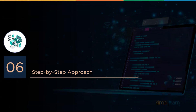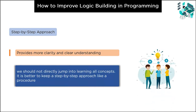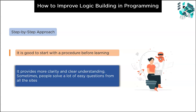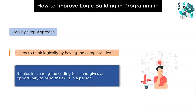Stage six is all about the step-by-step approach. We don't start talking from the day we are born; similarly, we should not directly jump into learning all the concepts. It is better to keep a step-by-step approach and go from basic to advanced level questions. Sometimes people solve a lot of easy questions but are not able to solve medium level questions — instead, make a balance of these levels. This approach helps think logically and clears coding tests.